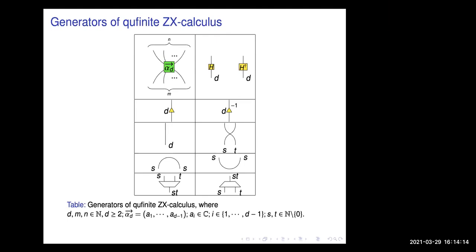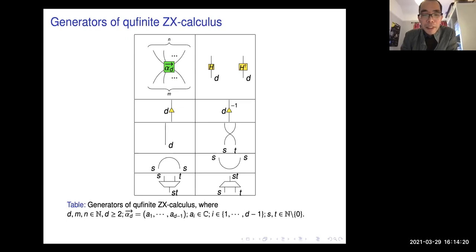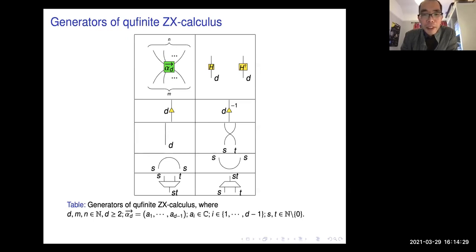A question: is this the same generator used in the scalable ZX calculus? The answer is yes, it is similar — but here it applies to any finite dimension.